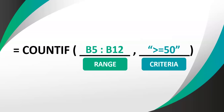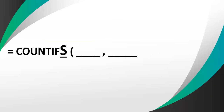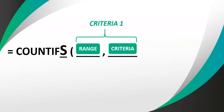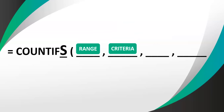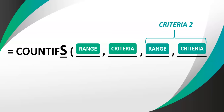What happens if there are multiple criteria — not just one? In that case, we can't use a COUNTIF; we would have to use the COUNTIFS function. The only difference is the IFS at the end, and it works exactly the same. There's a range and a criteria for the first criteria, then you put another comma and add two more parameters: the range and the criteria for the second criteria.